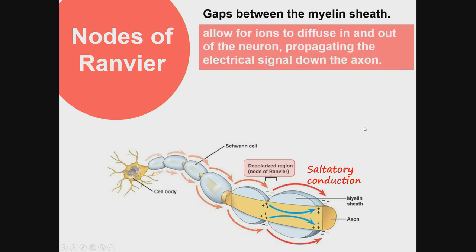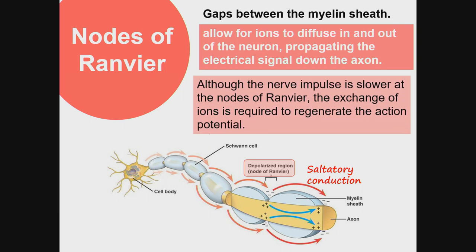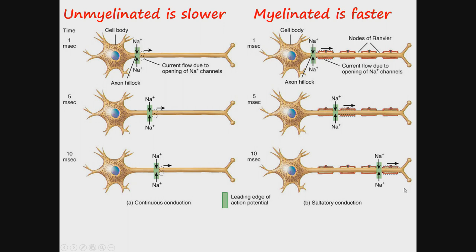The nodes of Ranvier are the gaps between the myelin sheath. They allow for ions to diffuse in and out of the neuron, propagating the electrical signal down the axon. Although the nerve impulse is slower at the nodes of Ranvier, the exchange of ions is required to regenerate the action potential through saltatory conduction. On unmyelinated neurons, the movement of action potential is slower because there is continuous conduction along the entire length of the axon, whereas saltatory conduction carries the nerve impulse faster.